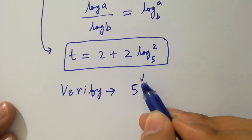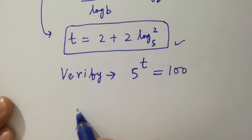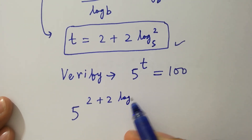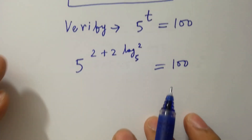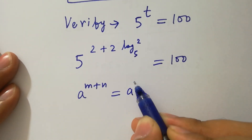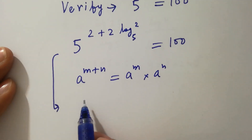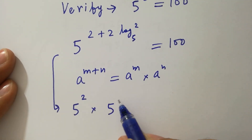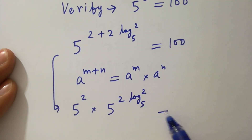To verify, put the value of t back: 5 to the power (2 plus 2 log 2 to the base 5) equals 100. Using the rule a to the power (m plus n) equals a to the power m times a to the power n, this becomes 5 squared times 5 to the power (2 log 2 to the base 5) equals 100.